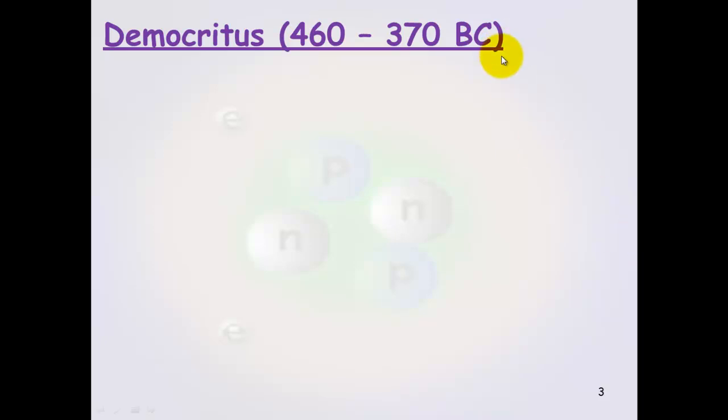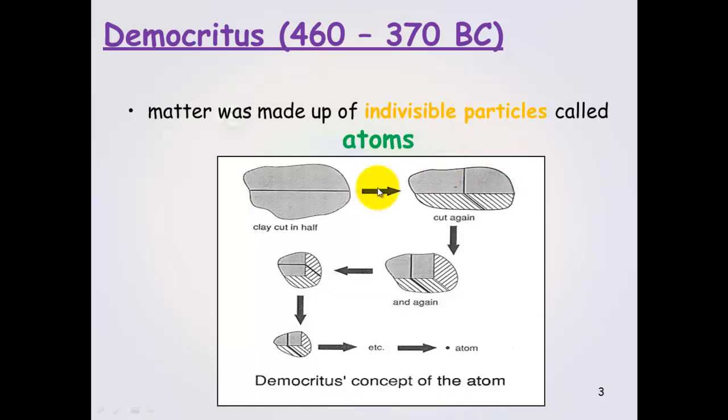Democritus, back in 460 BC, came up with the term atoms and he said that these were indivisible particles. Democritus basically said that if you continually cut something into pieces, you'll eventually get down to an indivisible particle called an atom which can be cut no more, broken down to no smaller pieces.